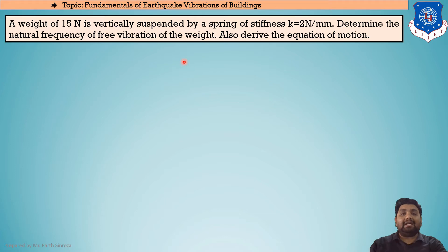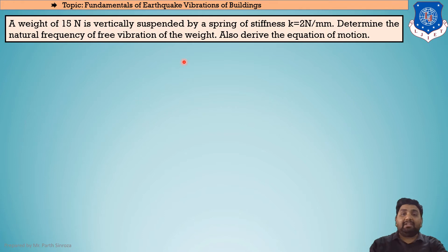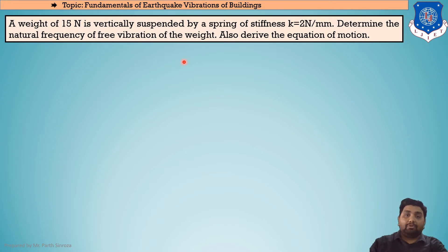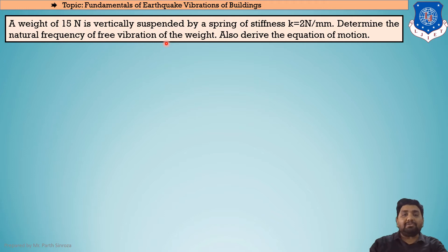There are four total cases: free undamped, free damped, forced undamped, and forced damped. Two major criteria to look at: first, whether the vibration is free or forced; second, whether damping is present. If 5%, 10%, or any value of damping is given in the question, it is a damped system. If the question asks for natural frequency of free vibration and no force is given, it is a free vibration problem.